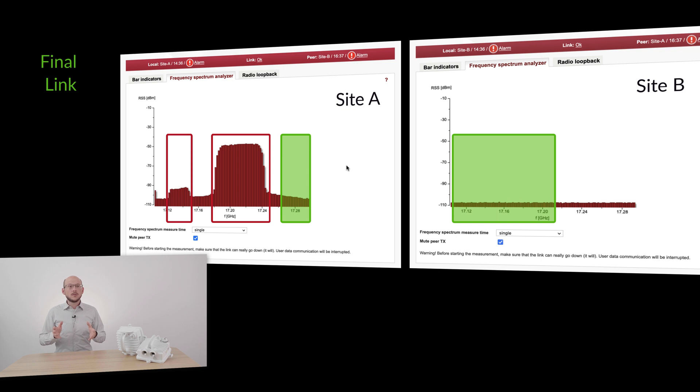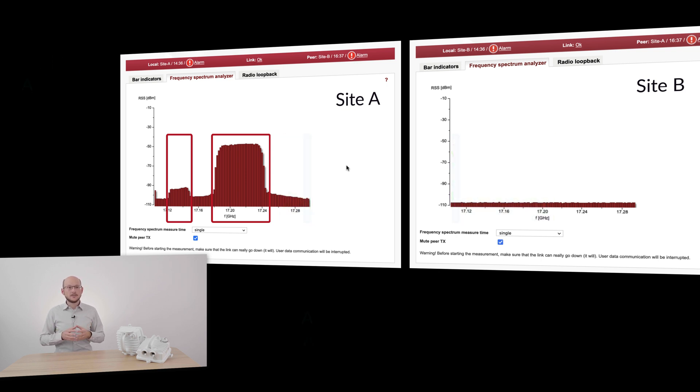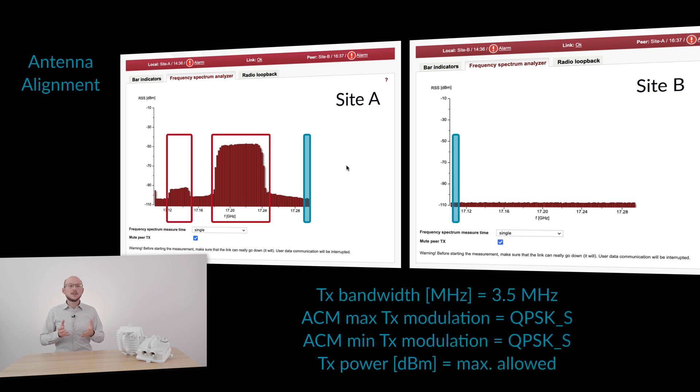To avoid them, we will use L1 and U40 channels for our link. Remember to set the narrowest TX and RX bandwidth, QPSK for maximum and minimum TX modulation, and TX power to maximum for easy antenna alignment.